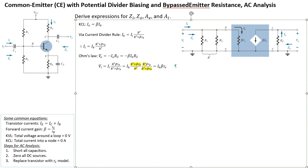We now have io, ii, vo, and vi. Let's work out Zi first. Zi is the input impedance seen from the source, which sees three resistors in parallel. Since R1 and R2 in parallel are called R prime, Zi is simply R prime in parallel with beta*re.